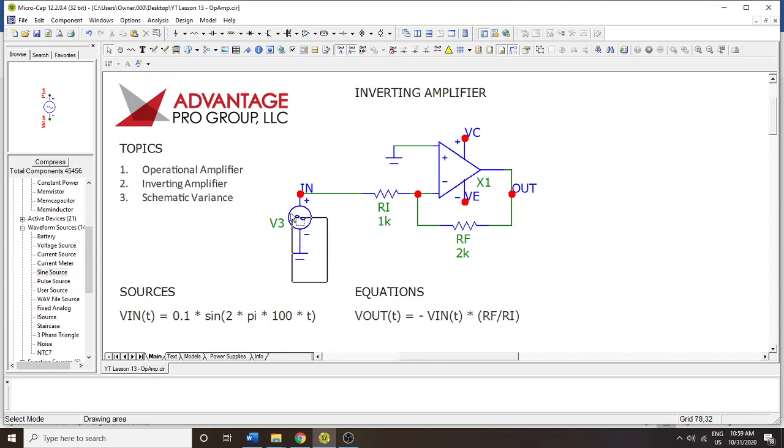But today we're just going to focus on how you would use this practically. And here you have the ratio between the RF and the RI, or the feedback resistance, and that creates a gain.